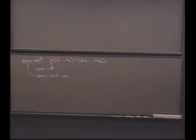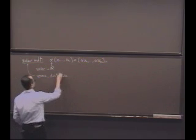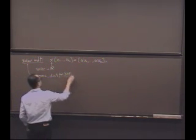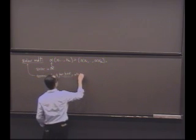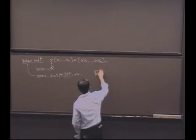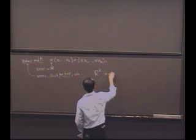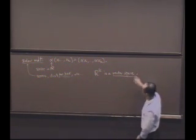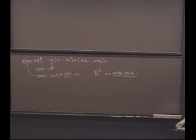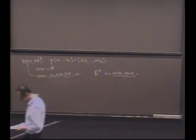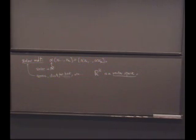And so it turns all these laws hold, hold, et cetera. So it turns R^k into what's called a vector space. And this is something you'd study more in an abstract algebra course. Very good.